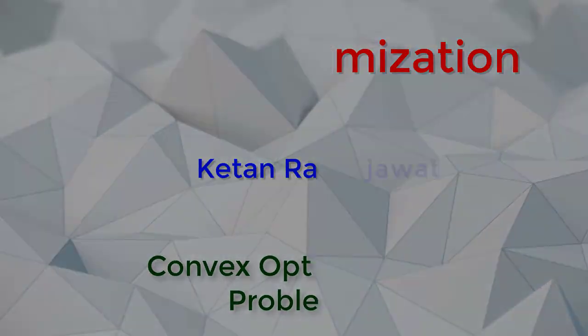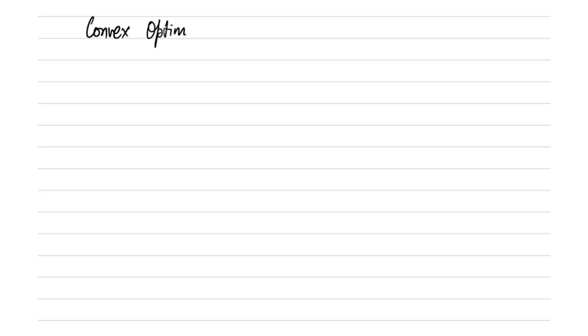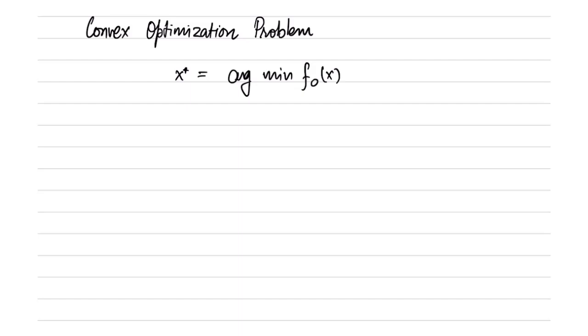Let us now look at convex problems. We have already seen the form of a general optimization problem. A convex optimization problem in standard form is as follows: x star equals arg min of f0 of x, where f0 of x is convex, fi of x is less than or equal to 0 for i equal to 1 to m, and ai transpose x minus bi is equal to 0 for i equal to 1 to p.